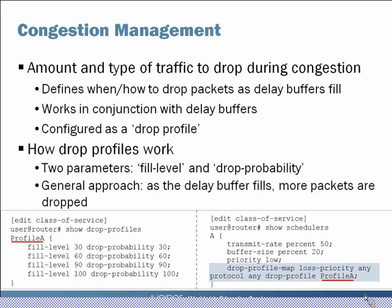The drop profile configuration needs to be applied into our scheduler using a drop profile map. On the bottom right you can see the scheduler with the drop profile map parameter added. You can specify a loss priority of high or low, which allows you to target specific traffic types configured earlier in the CoS process. There's also a protocol parameter — 'any' in this case — but it lets you select TCP versus UDP traffic and apply the drop profile more or less harshly to each.